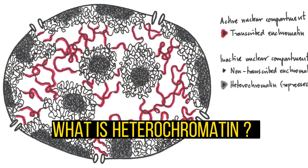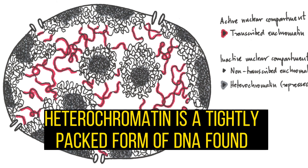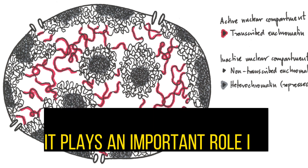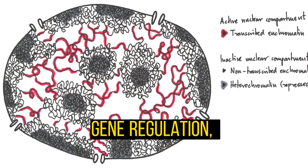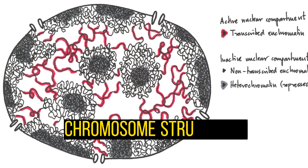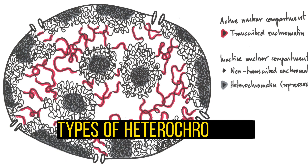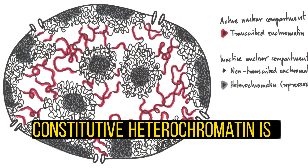What is heterochromatin? Heterochromatin is a tightly packed form of DNA found in eukaryotic cells. It plays an important role in gene regulation, chromosome structure, and genome stability. It is divided into two types: constitutive and facultative.